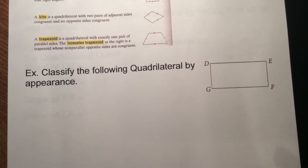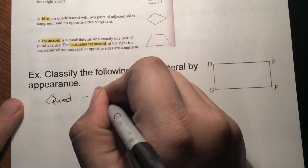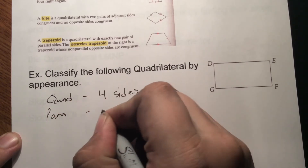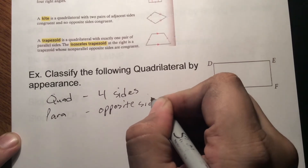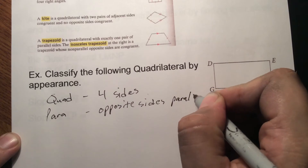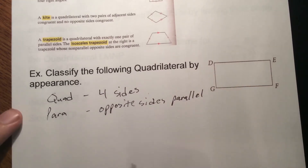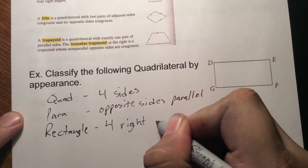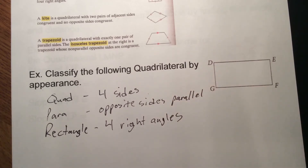Looking at this example: does it have four sides? Yes, so it's a quadrilateral. Are the opposite sides parallel? Yes, they look parallel, so it's a parallelogram. Do all four angles look like right angles? Yes, so it's a rectangle. Do all four sides look equal? No, so it can't be a rhombus or a square. It has two sets of parallel sides, so it's not a kite or a trapezoid.